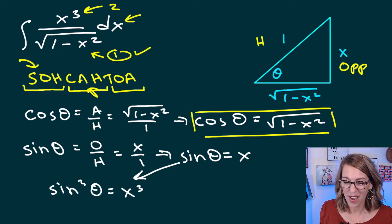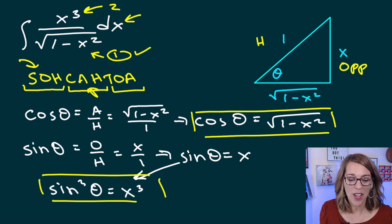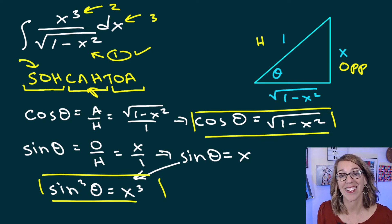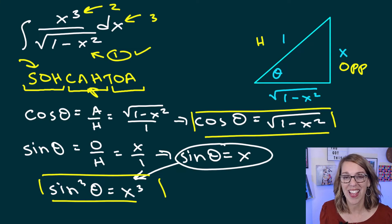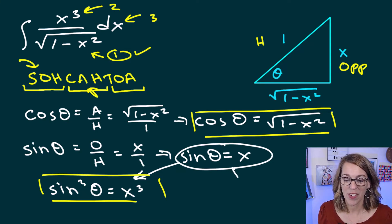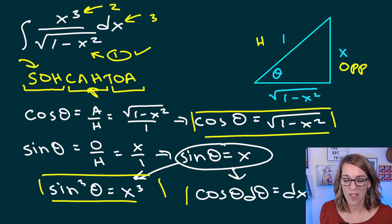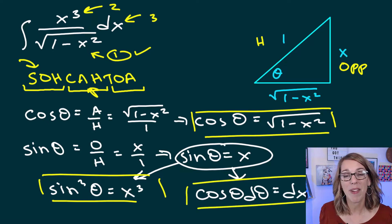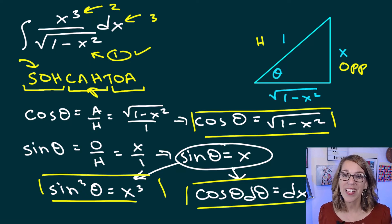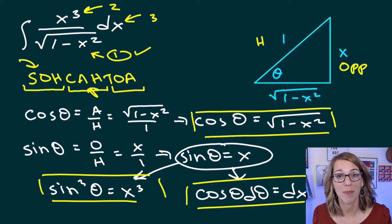I've got one more substitution to do: dx. I can get dx by going back to sin(θ) = x and taking its derivative. Taking the derivative gives cos(θ) dθ = dx. So I've got everything in the integral replaced and I'm ready to put together my substitution.